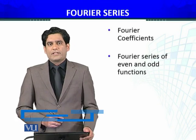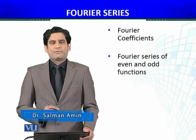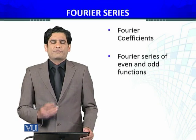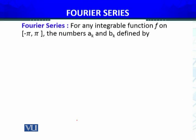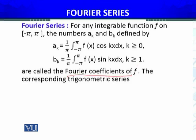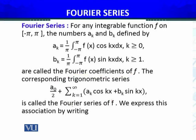The Fourier series coefficients which we have determined for even and odd functions — we will see that the Fourier series' shape becomes simplified; one coefficient, a or b, will be zero for all k. The numbers a_k and b_k are defined by the standard formula we have derived, and they are called the Fourier coefficients. The corresponding trigonometric series is called the Fourier series of f.